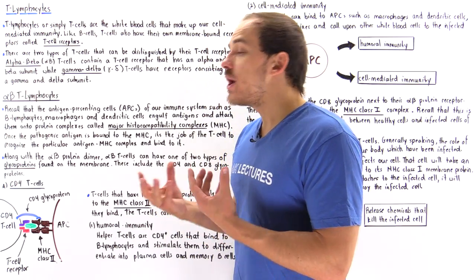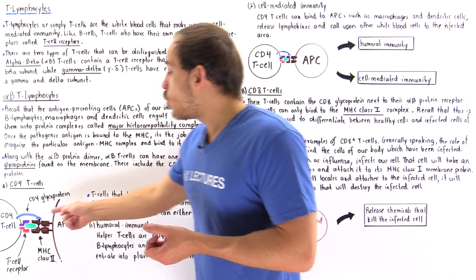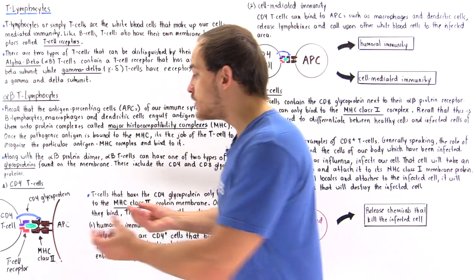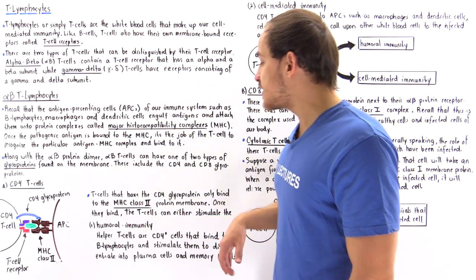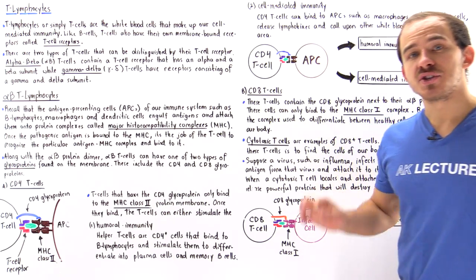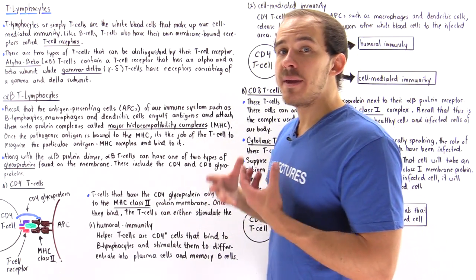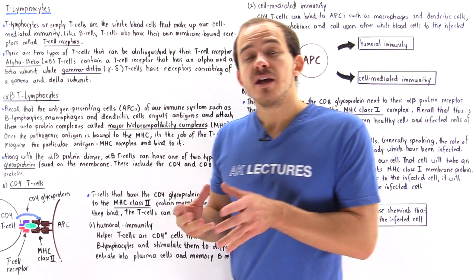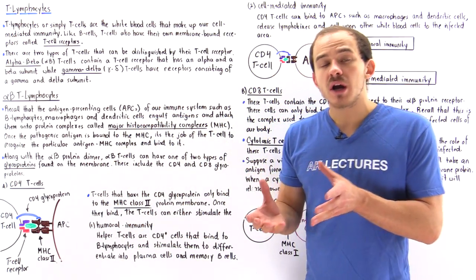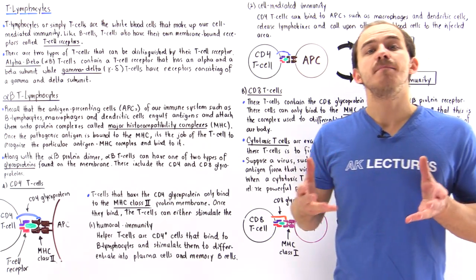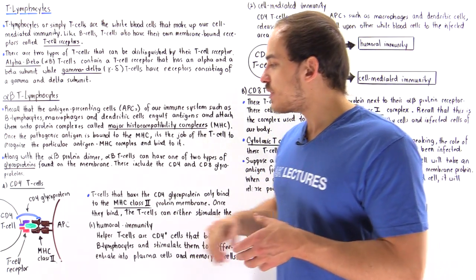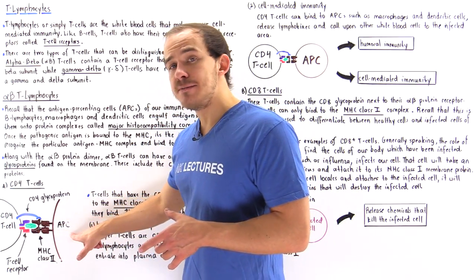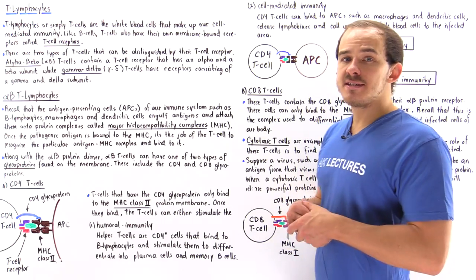Now the question is: what exactly takes place when this binding is initiated? Once the binding process takes place, the T cells can stimulate our immune system in two different ways — they can either stimulate the humoral immunity or they can stimulate the cell-mediated immunity. Let's suppose the CD4 T cell that binds onto the APC is a helper T cell.